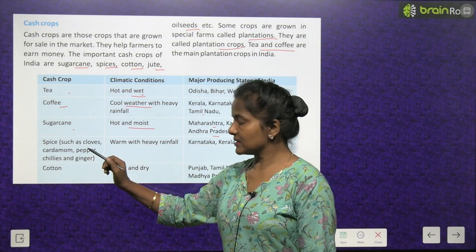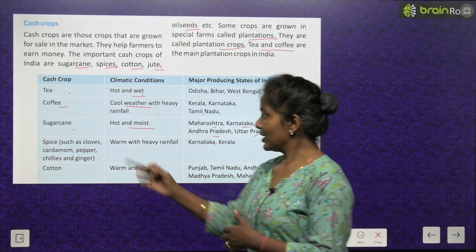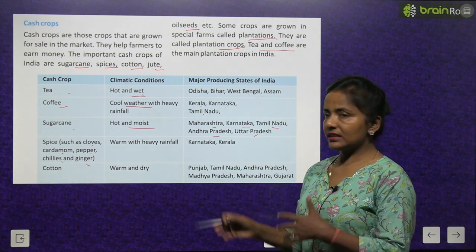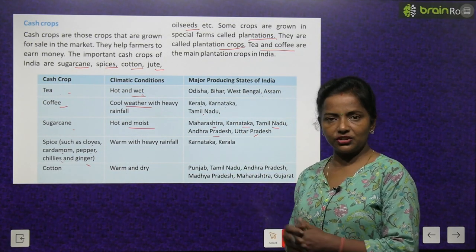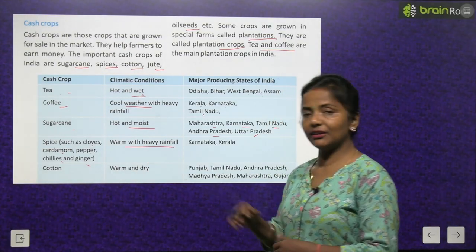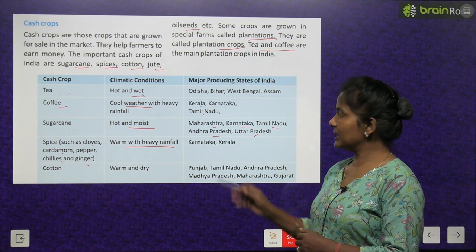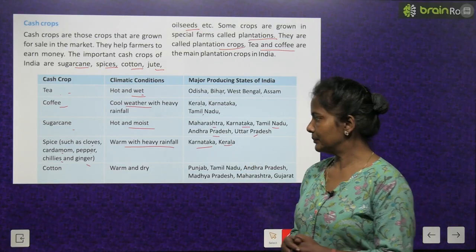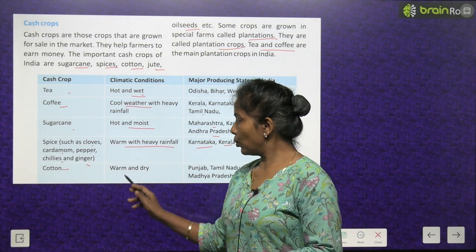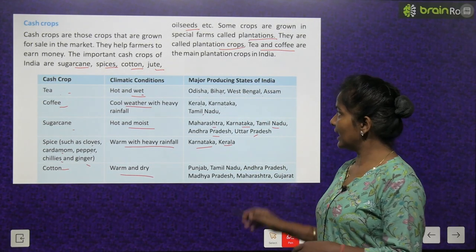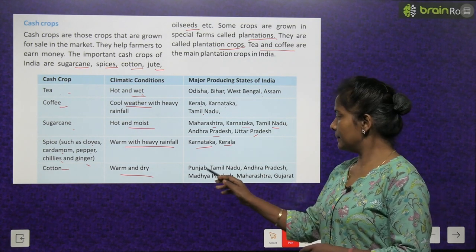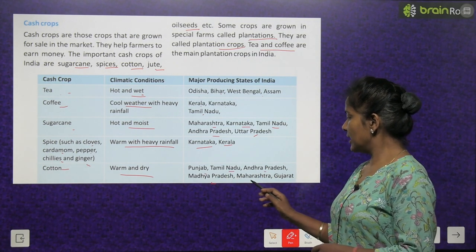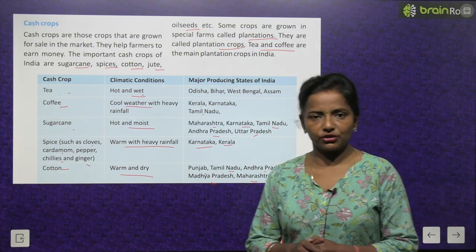Spices — such as cloves, cardamom, pepper, chillies and ginger — require warm climate with heavy rainfall. Major producing states are Karnataka and Kerala. Cotton needs warm and dry climate; major states: Punjab, Tamil Nadu, Andhra Pradesh, Madhya Pradesh, Maharashtra and Gujarat.